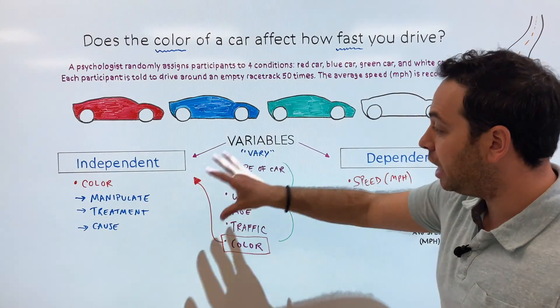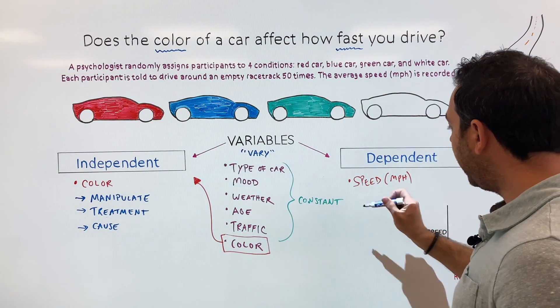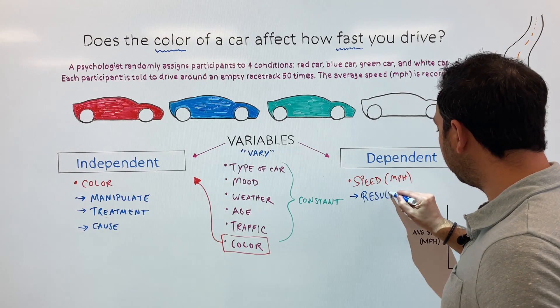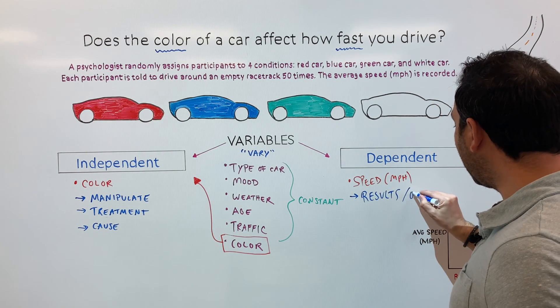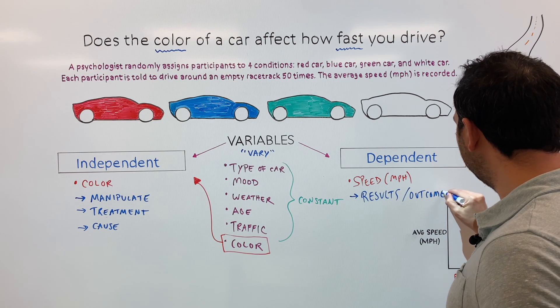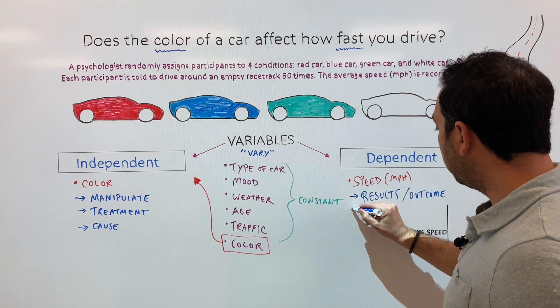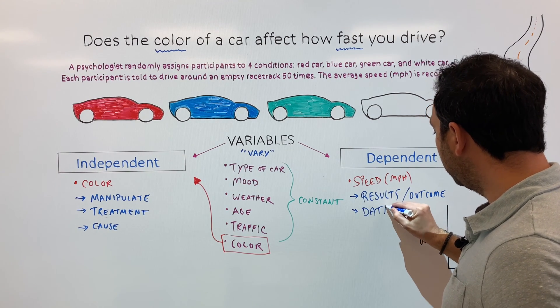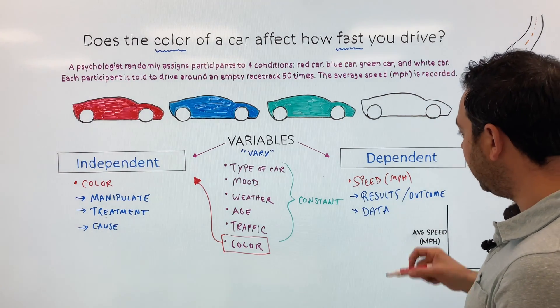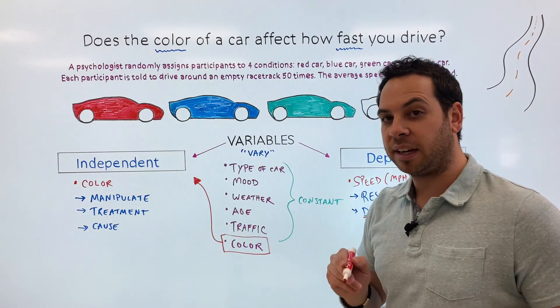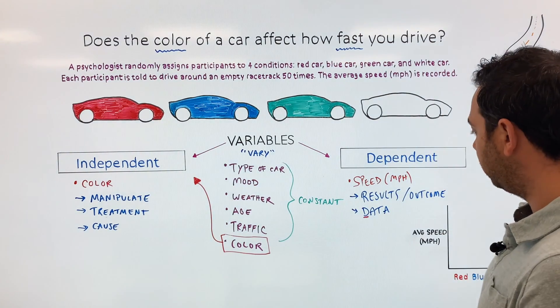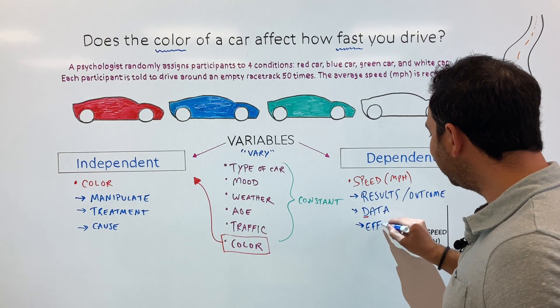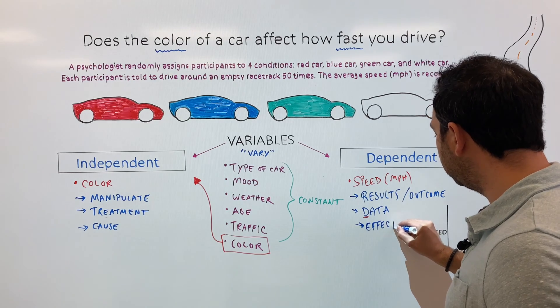So instead of manipulate, treatment, and cause, we have things like the dependent variable we consider the results. That's a nice word that you might hear about the dependent variable or the outcome. The results or outcome or what you measure. Or in this case, a nice memory technique would be this is the data. So a nice way to remember it is think about D, dependent data, DD, dependent data. And instead of the cause, we have the effect, cause effect. So this is just a nice way to distinguish the dependent and independent variables.